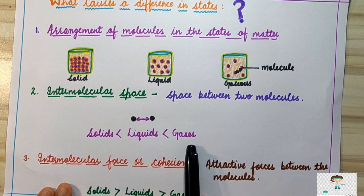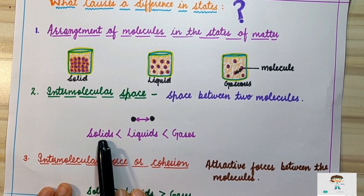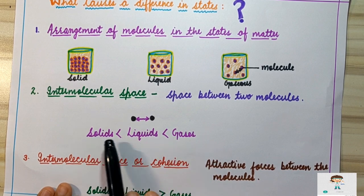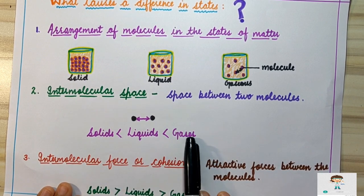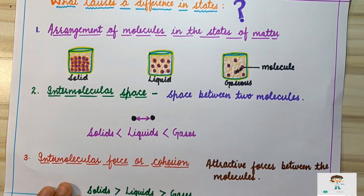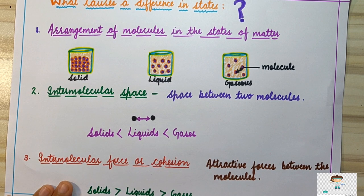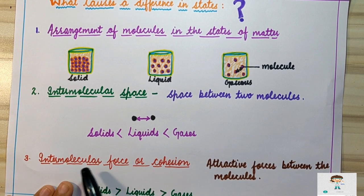To summarize intermolecular space: in solids, intermolecular spaces are minimum or negligible. In liquids, intermolecular spaces are intermediate — between those of solids and gases. In gases, intermolecular spaces are maximum because the molecules are very loosely packed, allowing them to flow, diffuse, and mix easily from one gas to another.